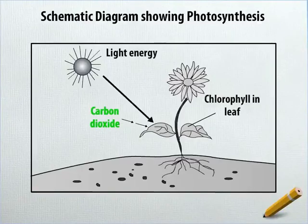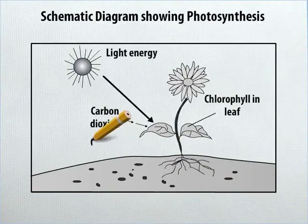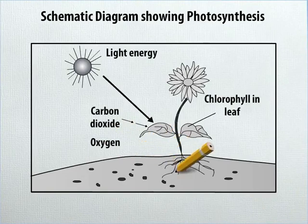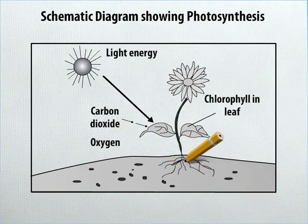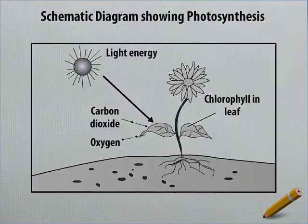Below carbon dioxide, write oxygen. From the left leaf of the plant, draw two small arrows pointing towards this text.